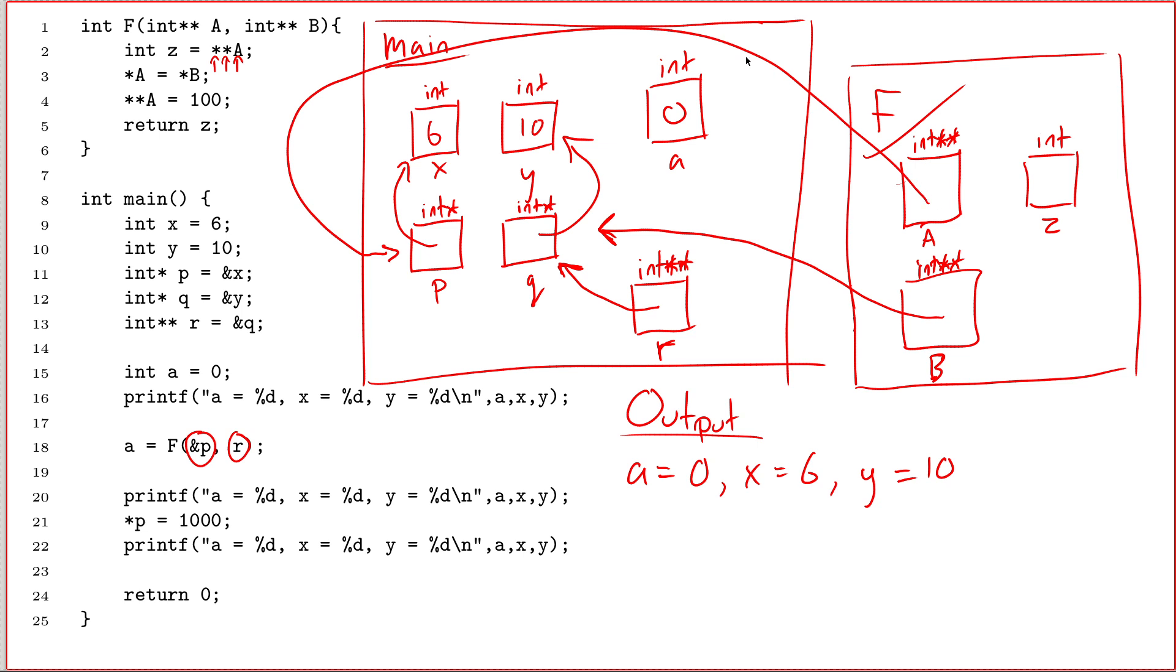So I start at a, I follow an arrow, and then I follow an arrow. So I get the number six. And then that gets subbed in here. Z equals six. All right, next thing. Star a equals star b.